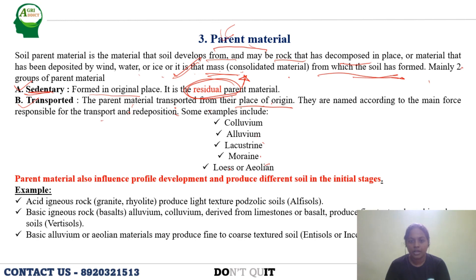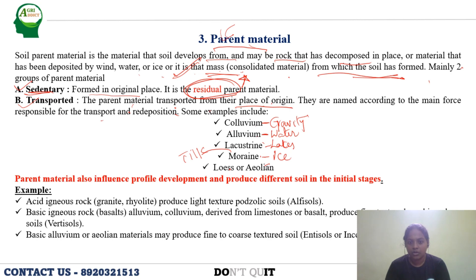Colluvium refers to transport and deposition due to gravity. Alluvium means transport due to water. Lacustrine refers to deposition due to lakes. Moraine or till refers to transport due to ice. Loess refers to transport due to wind. These terms are very important, especially for JRF examinations where matching questions may be asked.